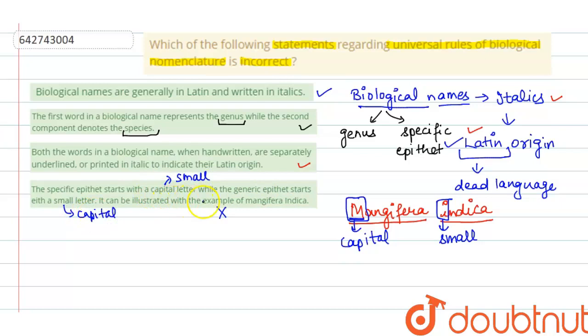It can be illustrated with the example. This is written wrong. What is correct? Mangifera indica where M should be capital and I should be small. So the incorrect statement out of the four is this last one. So this is our answer. Thank you.